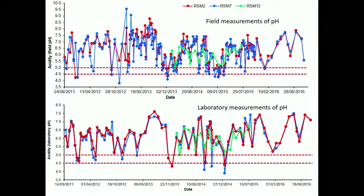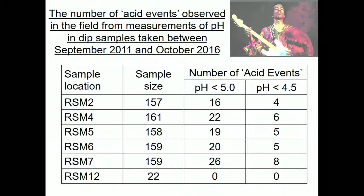The laboratory measurements, not as frequent as field measurements, were done weekly during the construction phase. These acid events were relatively infrequent — we didn't record any at the highest sites, though fewer samples were taken there. The pH did drop below 5 on around 10 to 20 percent of occasions.